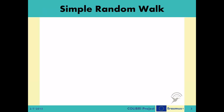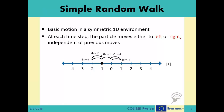Simple random walk is a basic motion described in the mathematical literature first in 1905 by Karl Pearson. As the name suggests, it is a fairly simple motion, which is defined in a symmetrical one-dimensional environment. At each time step, the moving object moves one step to the right or one step to the left. This direction choice is probabilistic, with 50% chance of moving to the left and 50% chance of moving to the right. The movement at each step is independent of the previous steps.